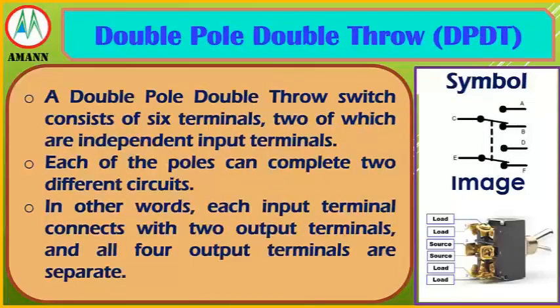Double Pole Double Throw (DPDT) Switch: consists of six terminals, two of which are independent input terminals. Each of the poles can complete two different circuits — in other words, each input terminal connects with two output terminals, and all four output terminals are separate.